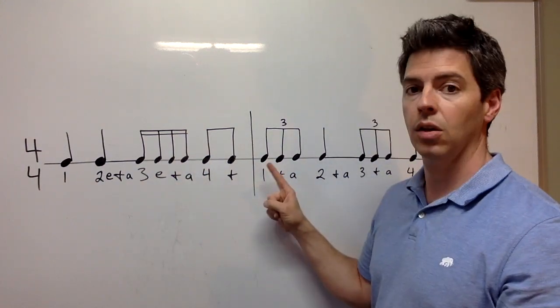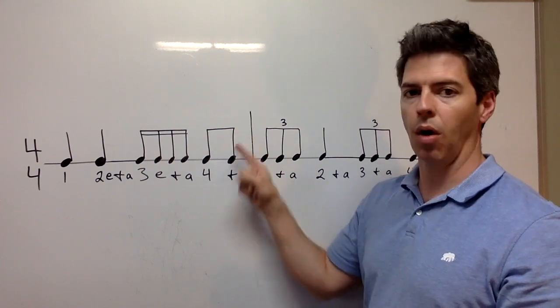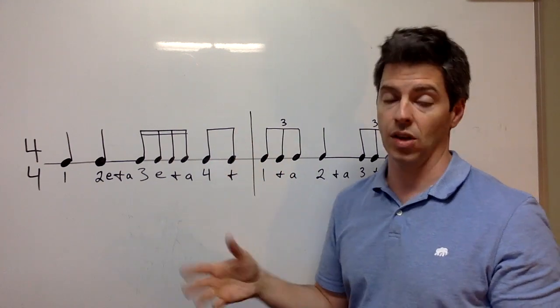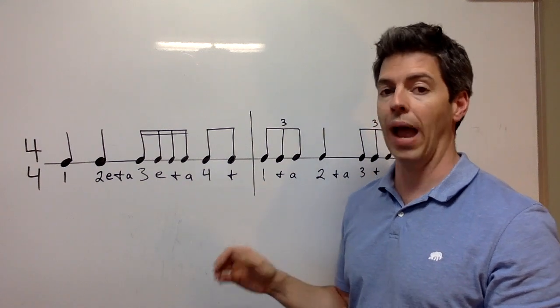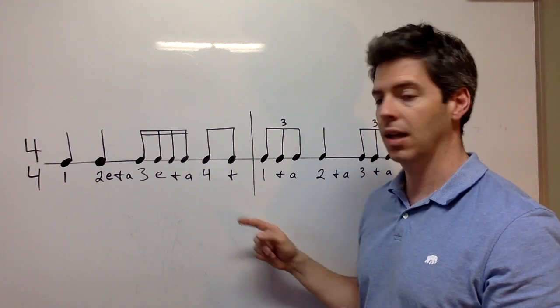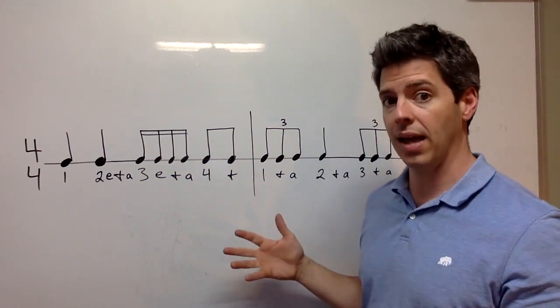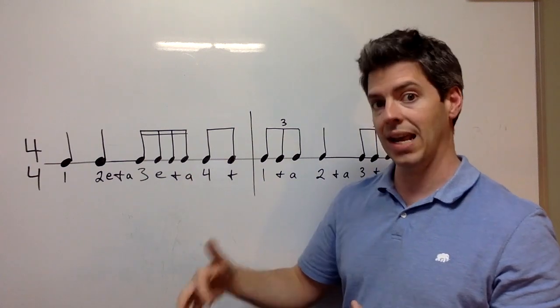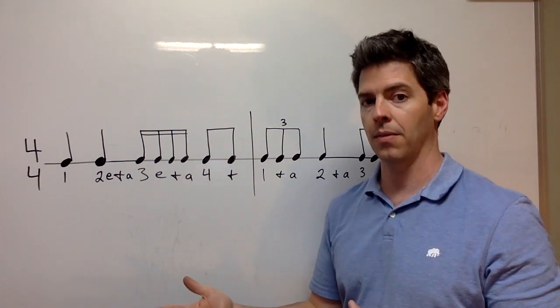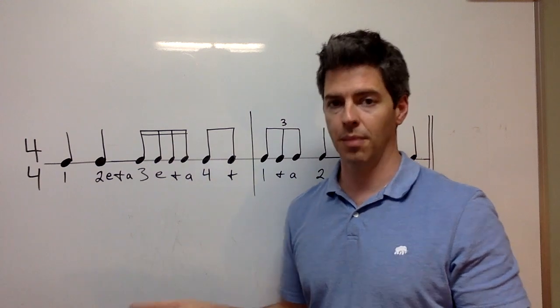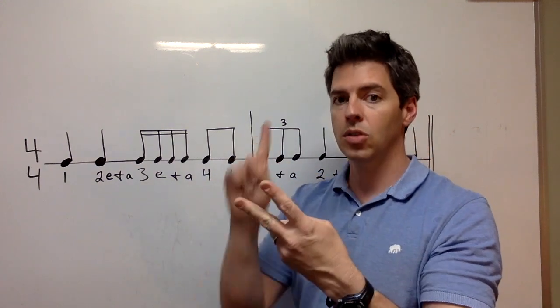Triplets, one and a. And eighth notes, they have the one bar, four and, or whatever beat it's on, one and two and. So eighth notes are one and two and. Triplets are one and a, two and a. And 16th notes are one E and a, two E and a, three E and a. So you should always subdivide. So count out loud, subdivide.